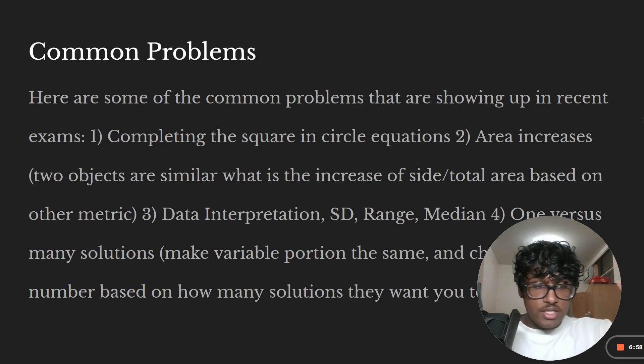Another type of problem is one solution versus many solutions. So it'll give you an equation and it'll be like, make this equation only have one solution or make it have no solutions. And basically the idea is we want to make all the variables the same. Let's say the first equation is like 2X plus 5Y equals 7. And the second equation is like 4X plus 10Y equals whatever. And we need to figure out what that whatever value is. So basically we want to make the variables the same first. So make them the same. You can divide that second equation by two and then the variable side becomes the same. Now it's only the numbers that have to change.